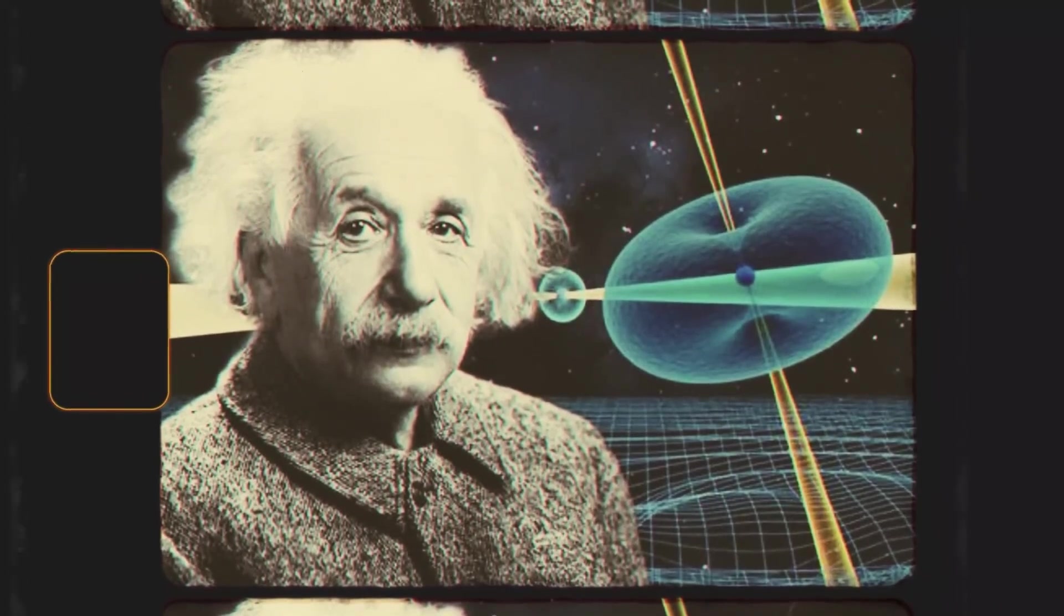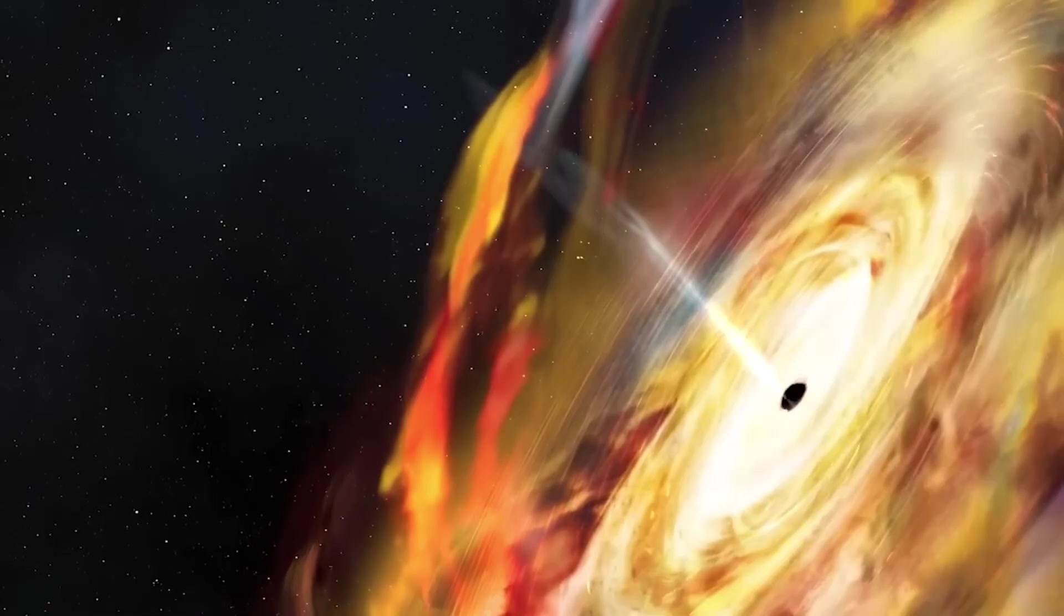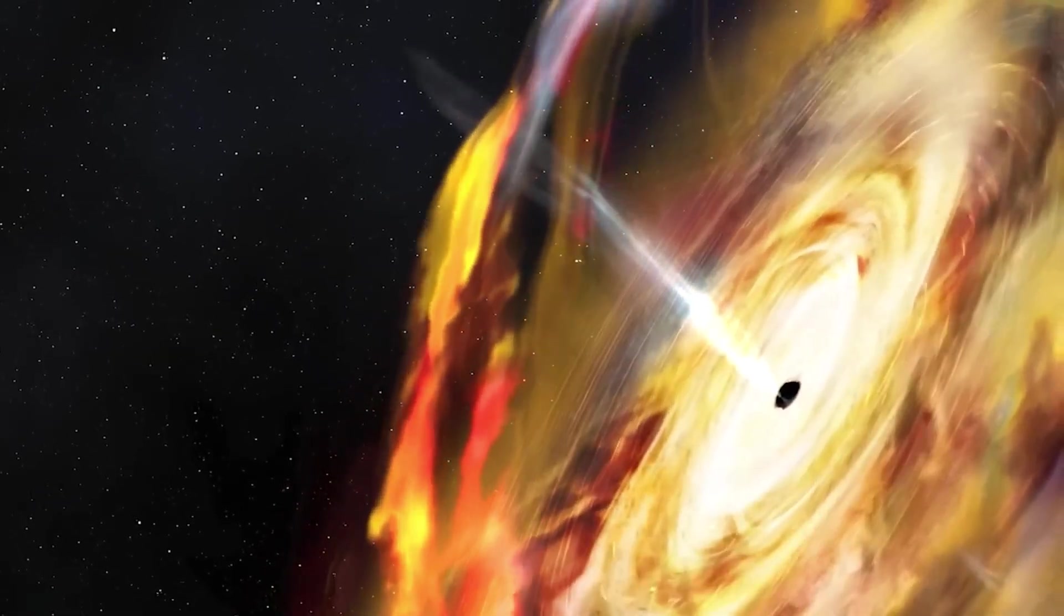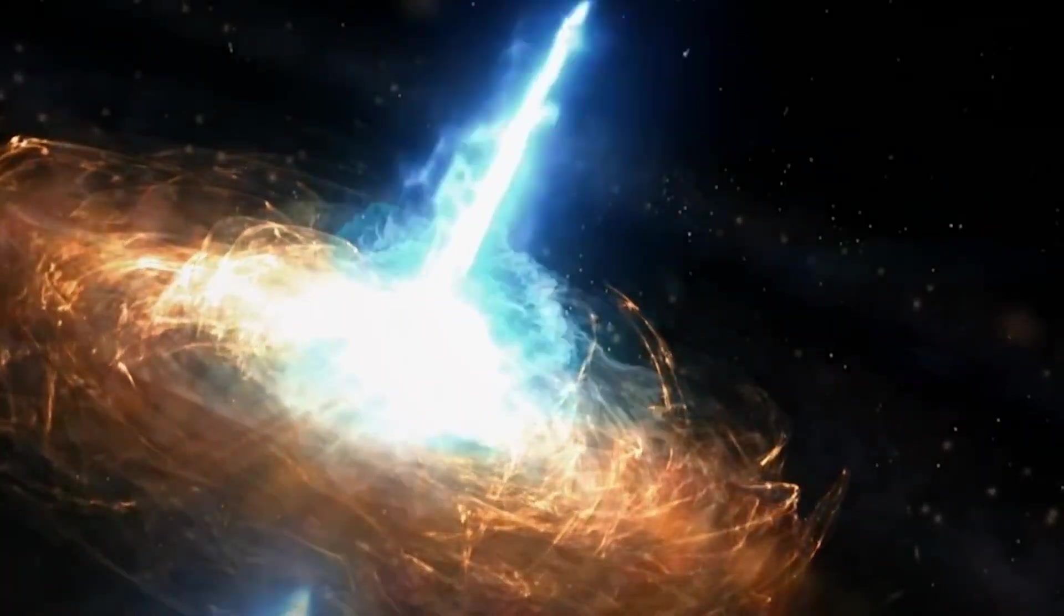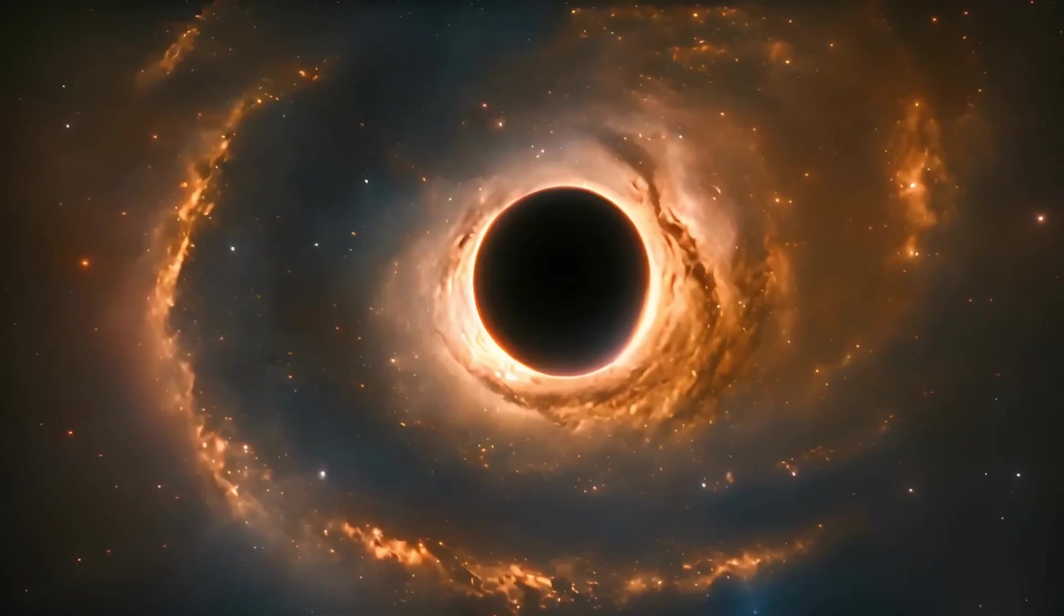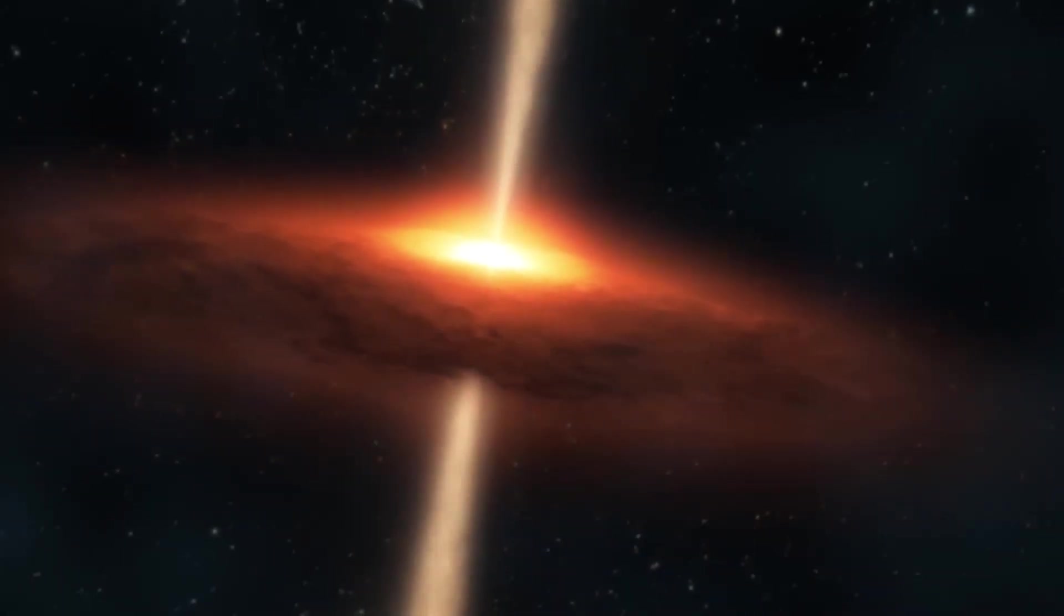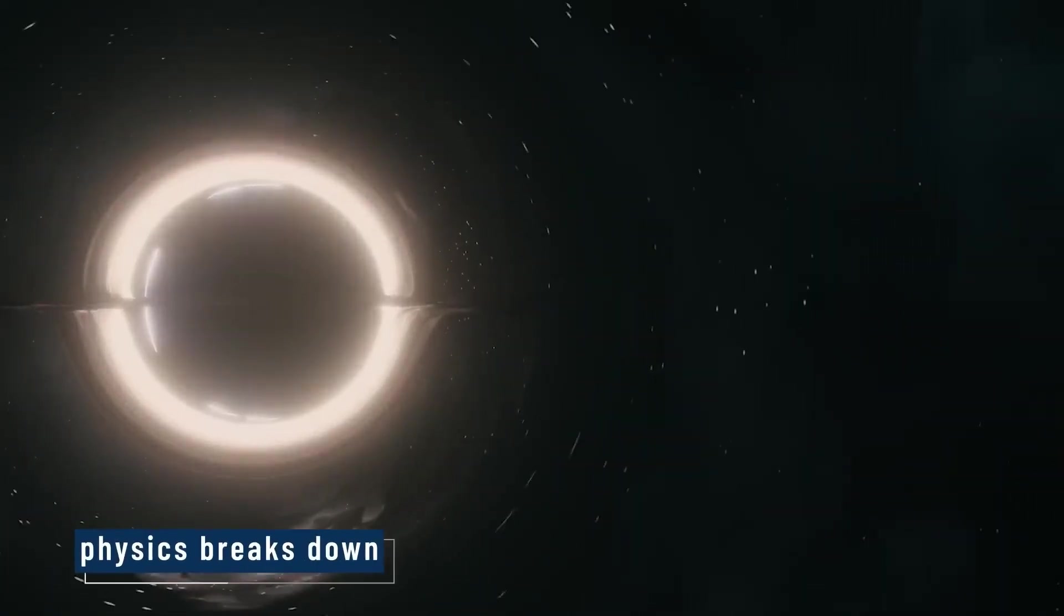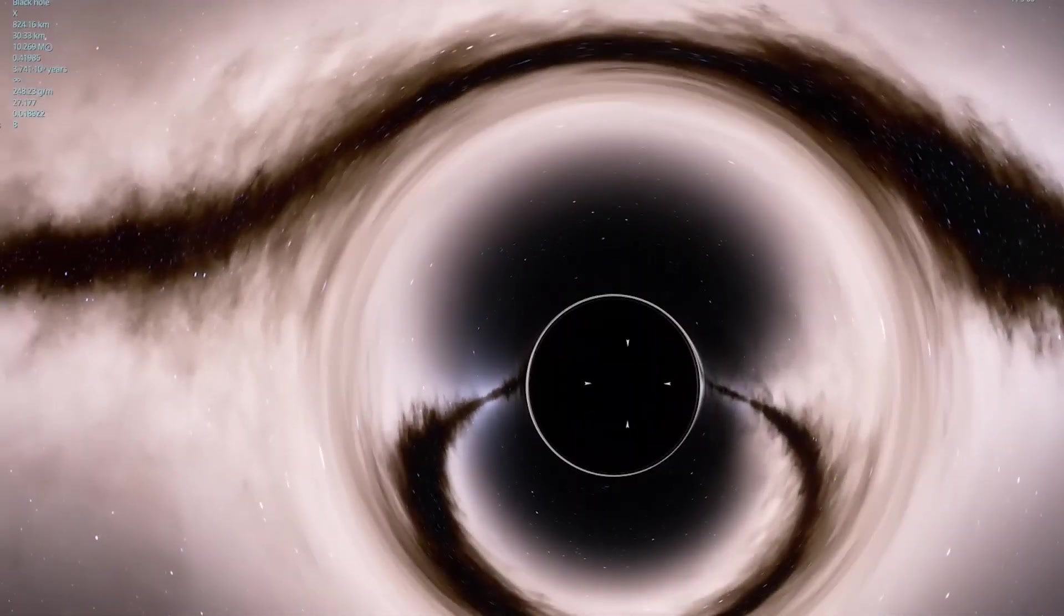But there is something even more dynamic happening as well. When galaxies collide and merge, their central black holes move gradually toward each other in a slow gravitational dance. Over millions of years, they spiral inward, eventually merging together in a final spectacular burst of gravitational waves. These events are relatively rare, but we have already detected several of them using advanced observatories like LIGO. This shows us that even though entire galaxies do not get swallowed, their central black holes can and do fuse into even larger, more massive ones.